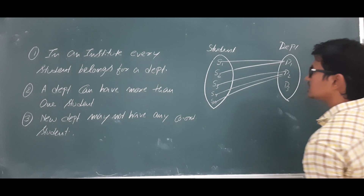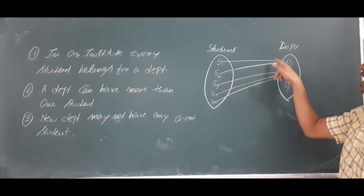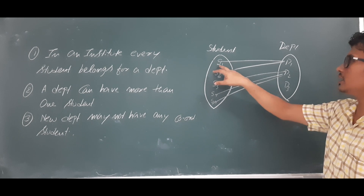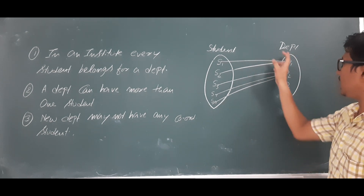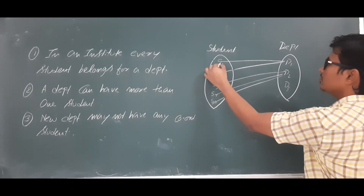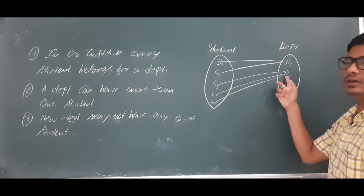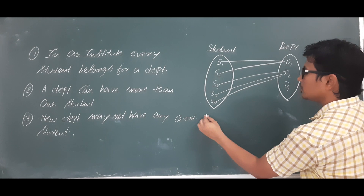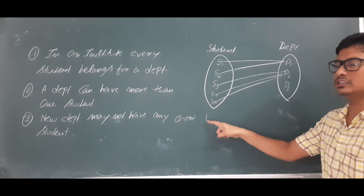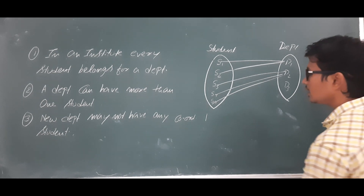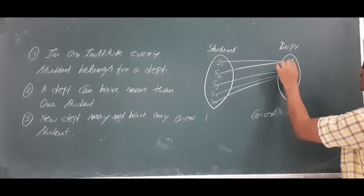Cardinality tells us the maximum number of entities in the other set that an entity can have a relationship with. For example, student S1 has a relationship only with department one, and S3 has a relationship only with department two. So the maximum number of departments a student is related to is one — the cardinality of the student is one.